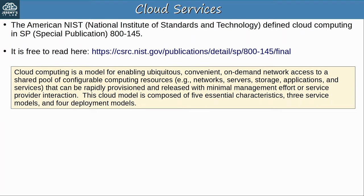Next, community cloud: the cloud infrastructure is provisioned for exclusive use by a specific community of consumers from organizations that have shared concerns, for example mission, security requirements, policy, and compliance considerations. It may be owned, managed, and operated by one or more of the organizations in the community, a third party, or some combination, and it may exist on or off-premises. This is the least common cloud deployment. It's similar to private cloud, but the infrastructure is reserved for use by only a specific group of organizations.